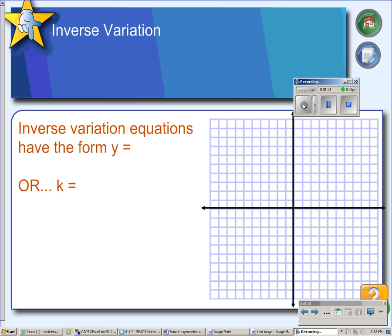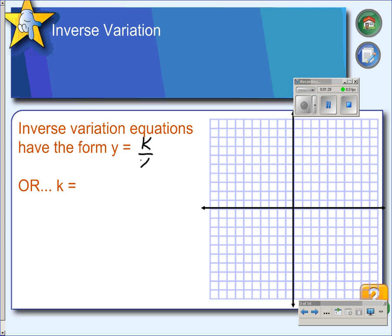Inverse variation equations have the form y equals k over x. And if you solve for k, you find that you can get the constant term by multiplying the x times the y values in a table, which we'll get to later.